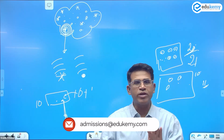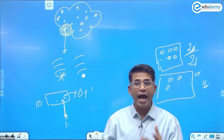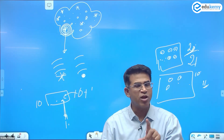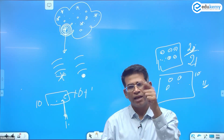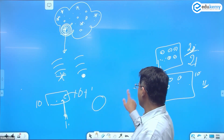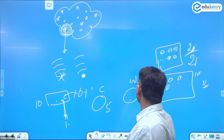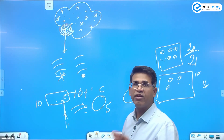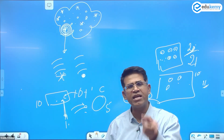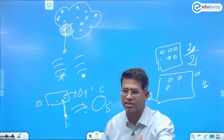Now, in which case does saturation happen faster - cold air or warm air? Warm air has more capacity, cold air has less capacity. So cold air saturates faster. If I have two packets of air - cold air with capacity of five and warm air with capacity of ten - and I keep adding moisture, the cold air becomes saturated first. So condensation happens faster in cold air, the air with less capacity.